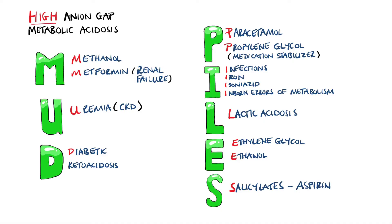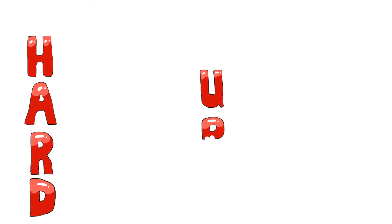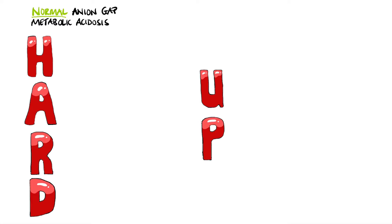Causes of a normal anion gap metabolic acidosis can be remembered with the mnemonic HARD UP. Normal anion gap acidosis almost always features a drop in bicarbonate, and therefore we almost always see the level of chloride increase in an attempt to balance it out, which is why it's often called hyperchloremic acidosis. This is also the reason it's a normal anion gap acidosis, because the bicarbonate ion we lost is replaced with chloride, so no difference is noted in the formula.